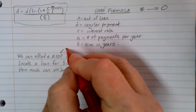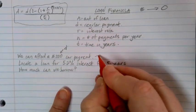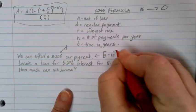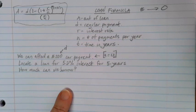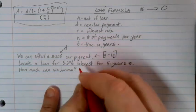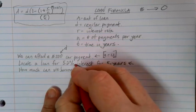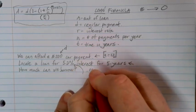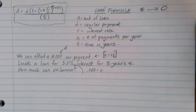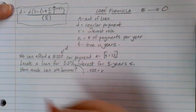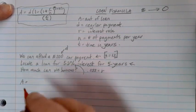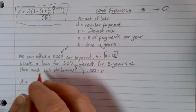Our $200 regular car payment is going to be D. Car payments are generally monthly, and so we'd be looking for a monthly car payment there with N equals 12. Our time is five years and our interest rate is 5.2%, so 0.052 will be our R value in our formula. We're looking for how much we can borrow, the amount of the loan, so we're looking for A.